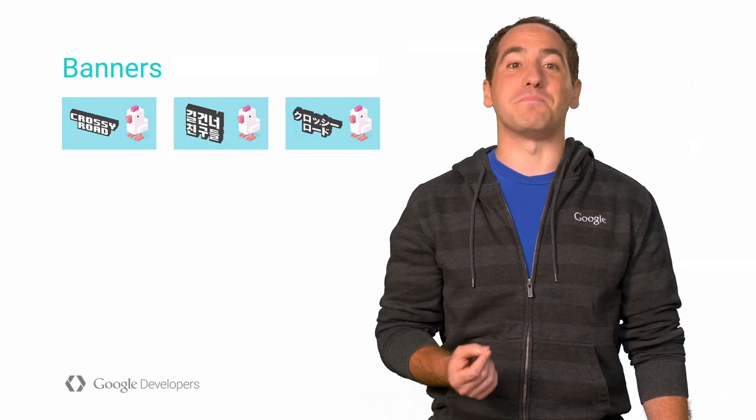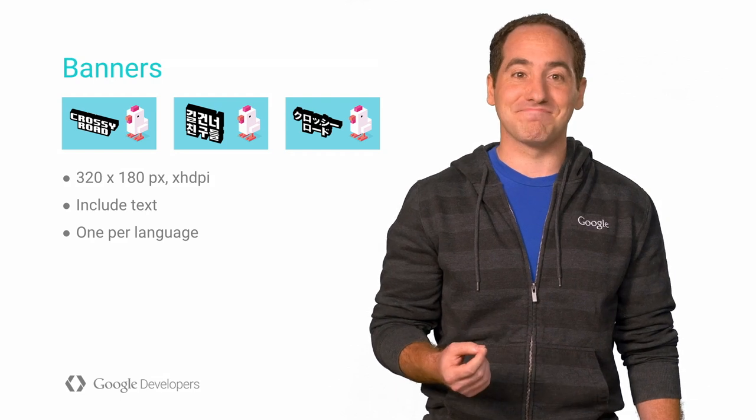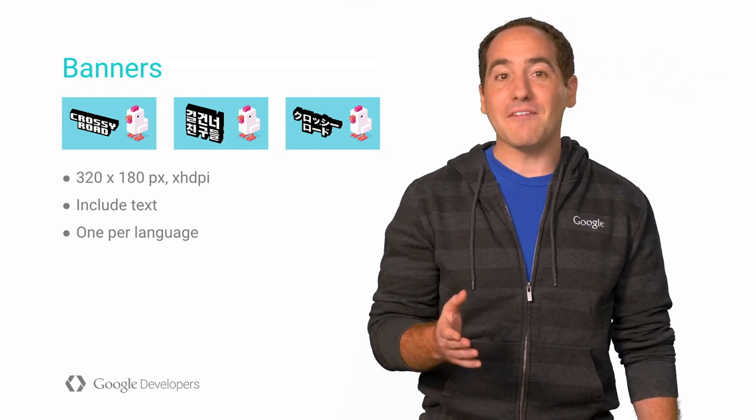Android TV uses banners instead of icons to represent your app on the home screen. If you don't have a banner, you'll need to create one. It's a fixed size drawable at 320 by 180. Your banner should always include text that identifies your game, and you should create a banner for each language you support. Now specify the banner in your manifest.